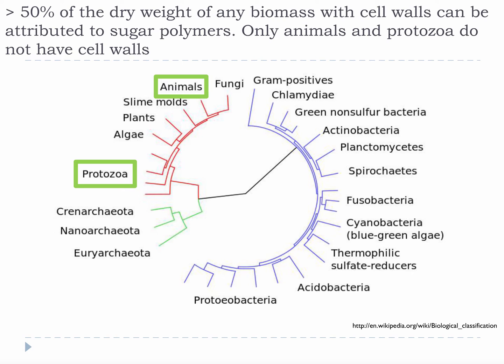Over half the weight of any dry biomass with cell walls can be attributed to sugar polymers. That means over half the weight of any dry biomass with cell walls is technically digestible if we can do the right processing. The only living things that don't have cell walls are animals and protozoa, so just about everything living on Earth is heavily composed of sugar polymers. This highlights the importance of appreciating this chemistry because once we learn how to use it better, it will apply to a vast amount of things that grow on Earth.